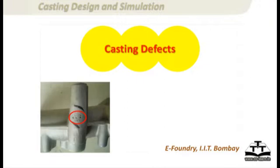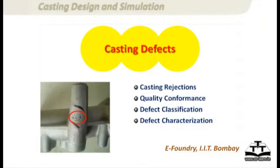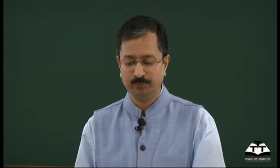In this lesson, we will talk about casting defects. We look at what are the different reasons why castings get rejected at different stages, and what we call quality conformance — how do you make sure a customer says your casting conforms to their requirement. We try to classify defects, because many times a wrong diagnosis leads to a wrong solution. We will talk about some major defects, how to diagnose them, and characterize their meta-causes, causes, and control parameters.